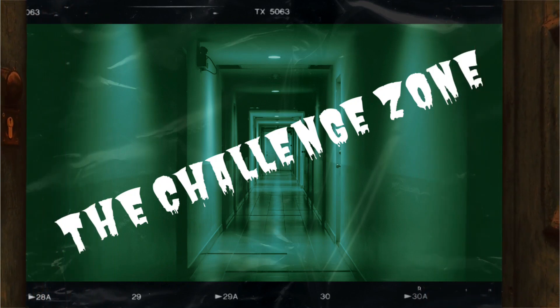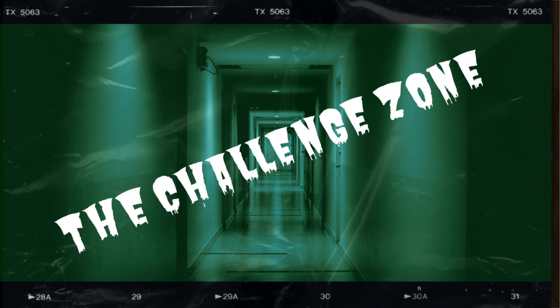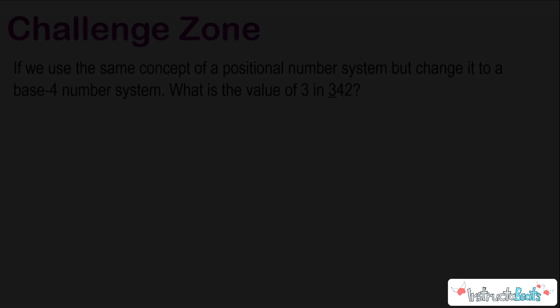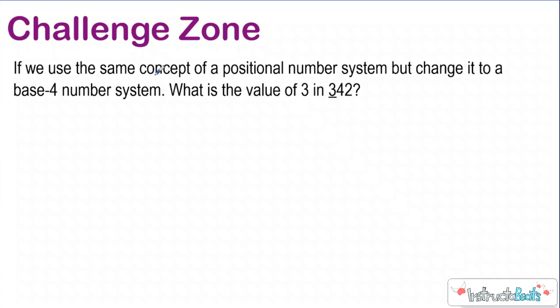Welcome to the Challenge Zone! So the challenge zone: if we use the same concept of a positional number system but change it to a base four number system, what is the value of three in 332? Now it's not base 10, it's base four. Go ahead and push pause — you might need to go back and rewatch the video to see how we came up with the base-10 values and the positions they were in. Give it a try, and then push play when you're ready to check your work.